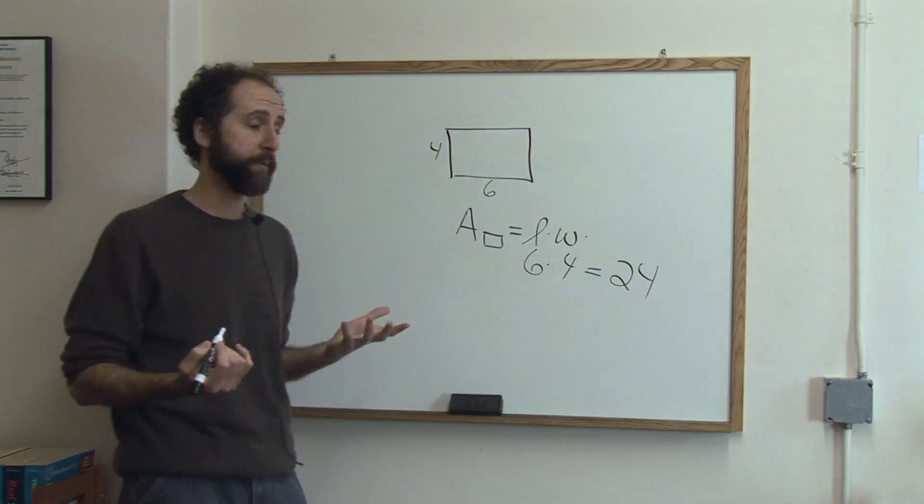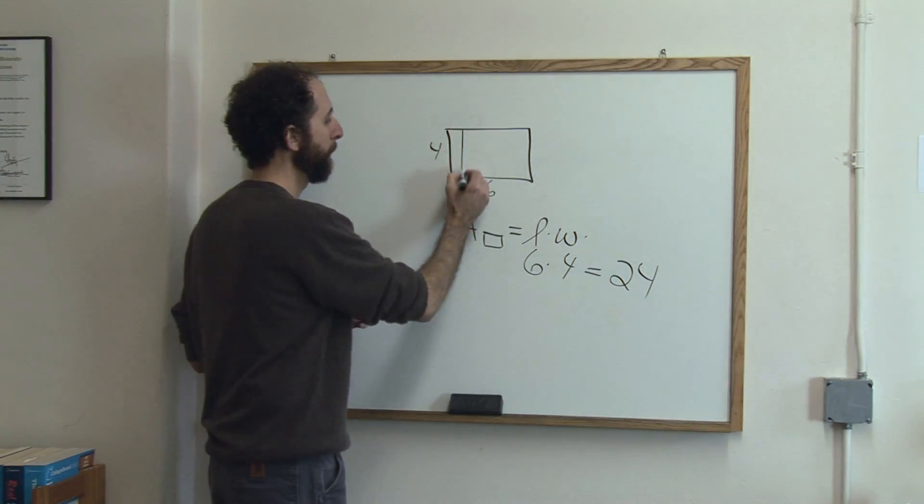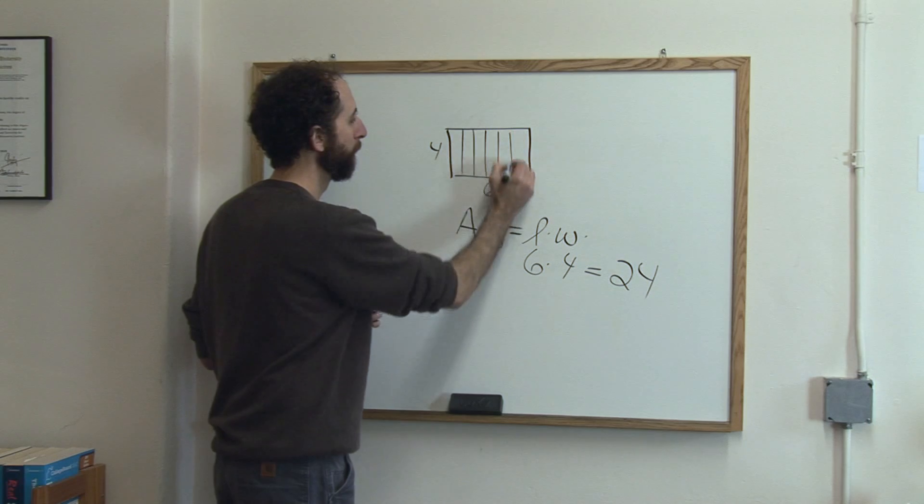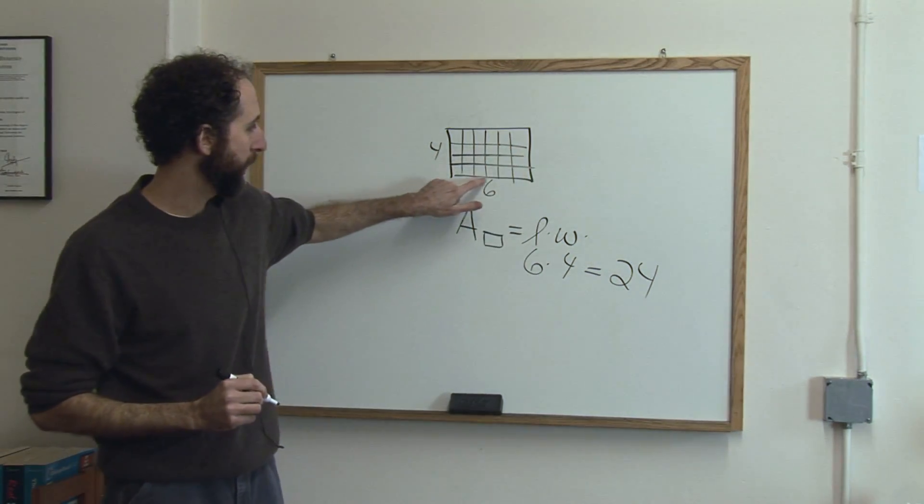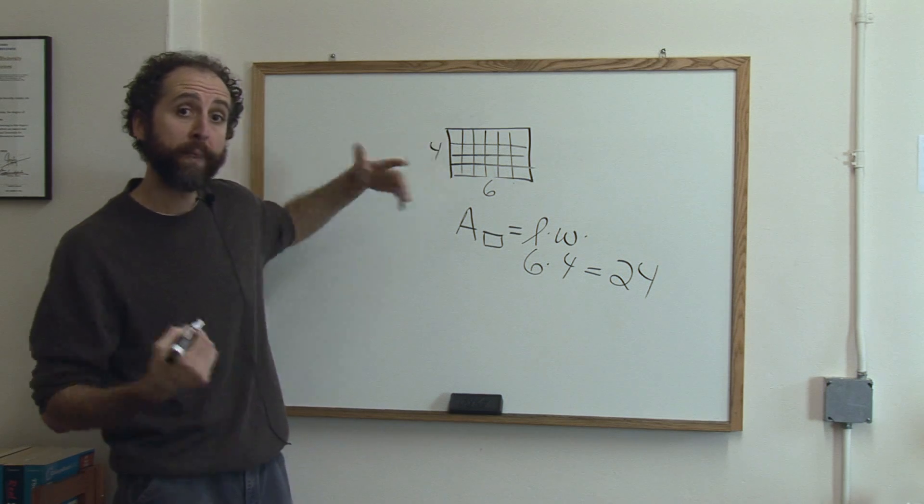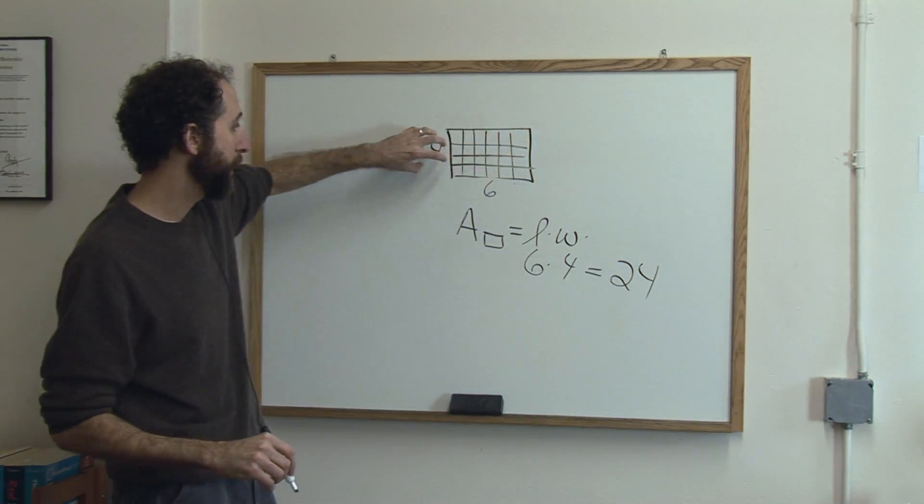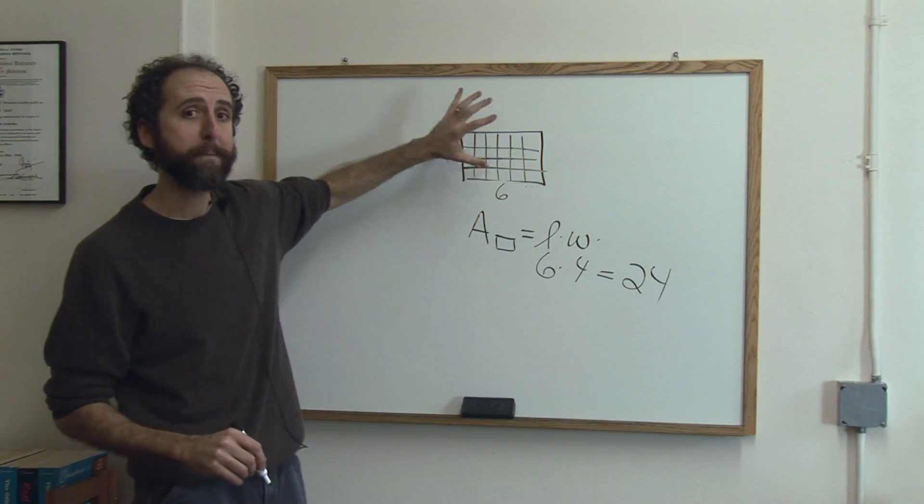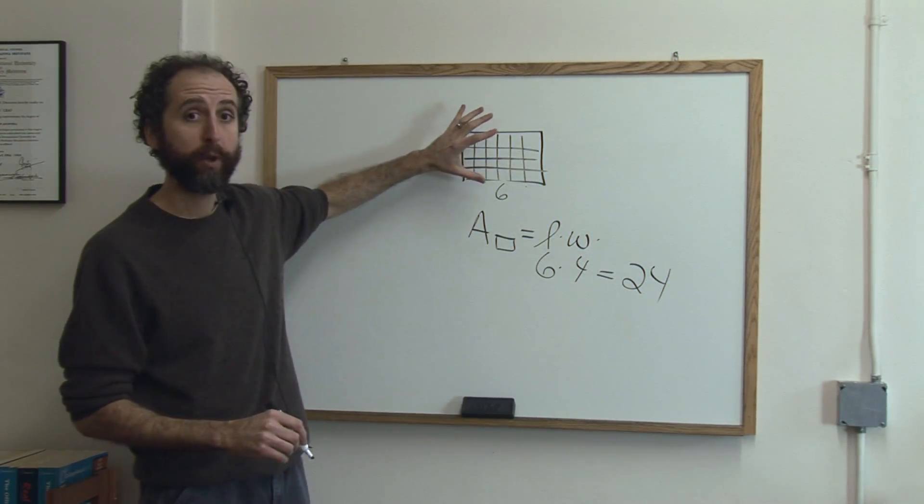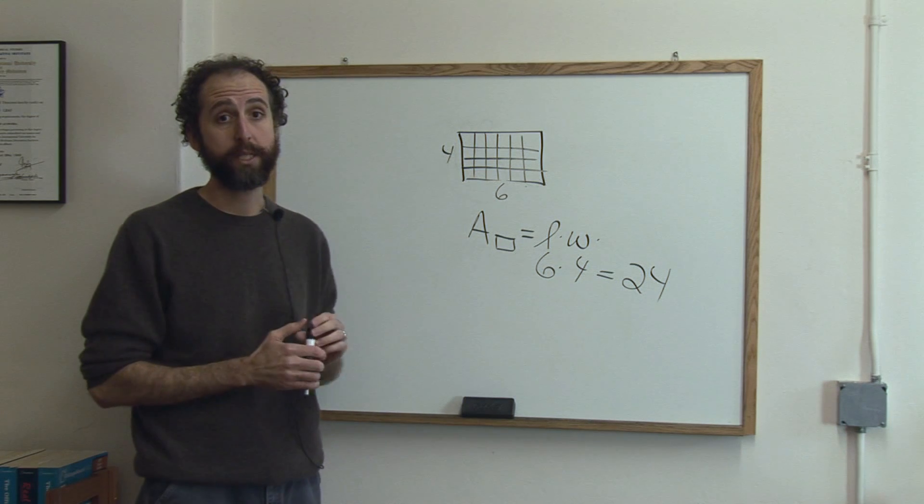Now what that really means is when you show the 6 units along this way and the 4 units along that way, it actually means that inside this rectangle we have 24 boxes that are 1 unit by 1 unit in this rectangle, and that's the area.